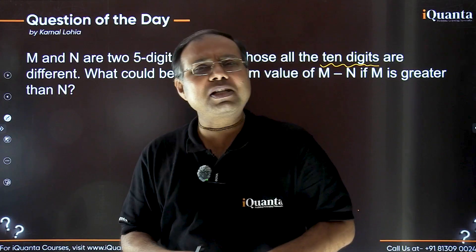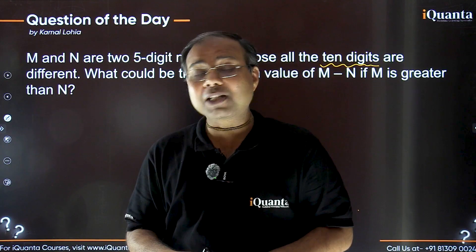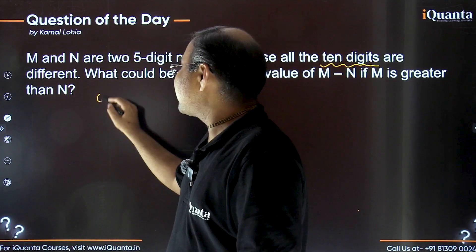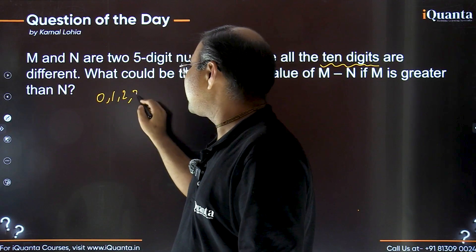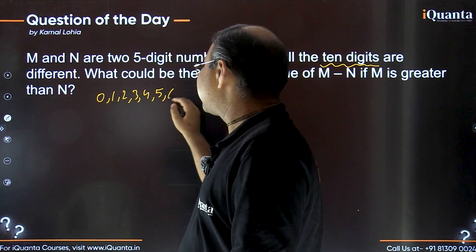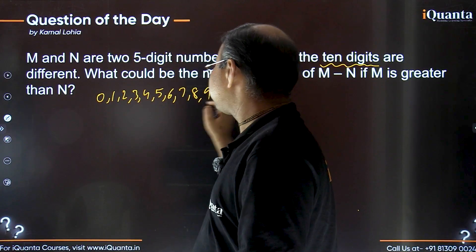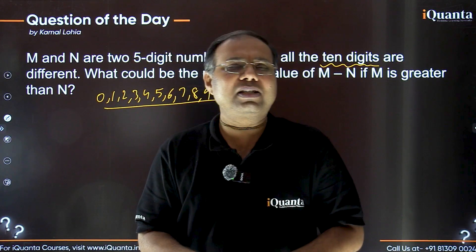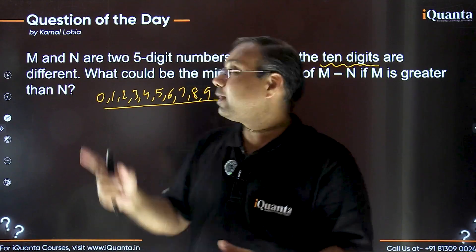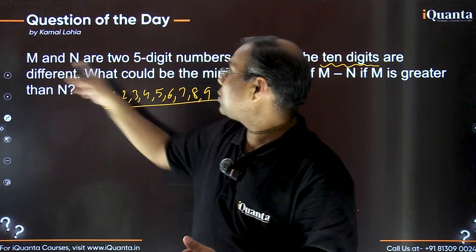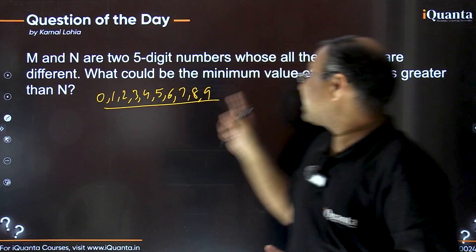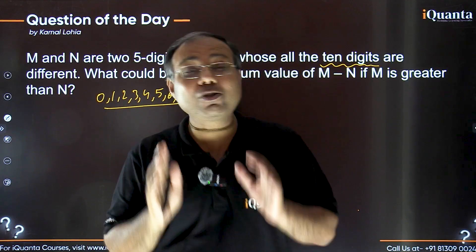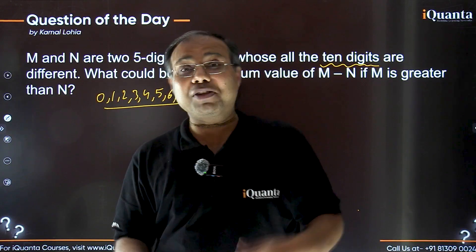Remember, what different digits do we use to write all the numbers? We use ten different digits. What are they? They are zero to nine. Zero, one, two, three, four, five, six, seven, eight and nine. By using these ten different digits, we can write the numbers. And in these two numbers, all the ten digits are different. That means all these ten digits need to be used exactly once without repetition.